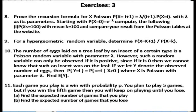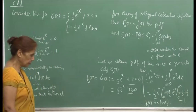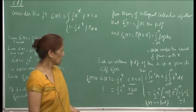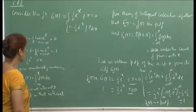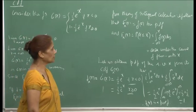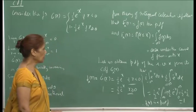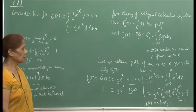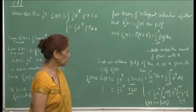Question 11: each game you play is a win with probability p. You plan to play 5 games, but if you win the fifth game you keep playing until you lose. The negative binomial distribution would be used here. Find the expected number of games that you play and the expected number of games that you lose. I hope you enjoy doing these exercises. I will continue with examples and further results about the cumulative distribution function.